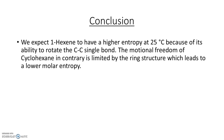So in conclusion, we expect 1-hexene to have a higher entropy at 25 degrees Celsius because of its ability to rotate the C-C single bond. The motional freedom of cyclohexane, in contrast, is limited by the ring structure, which leads to a lower molar entropy.